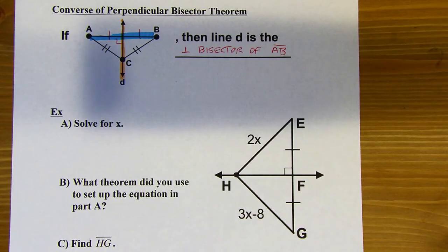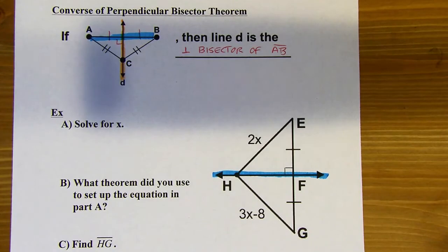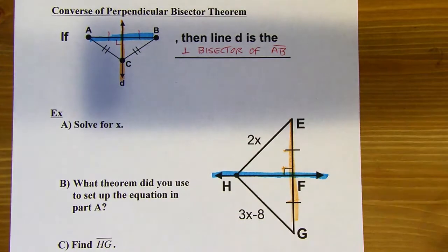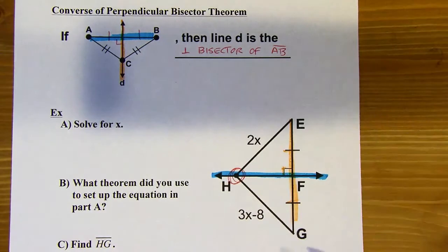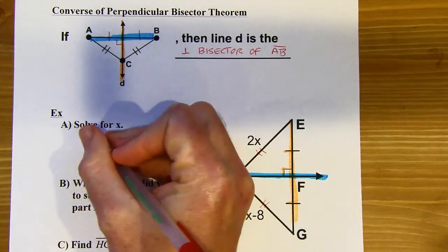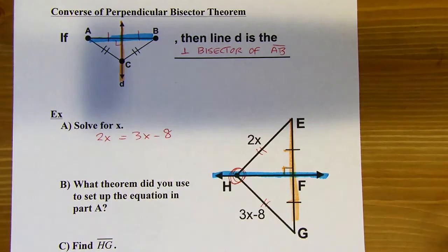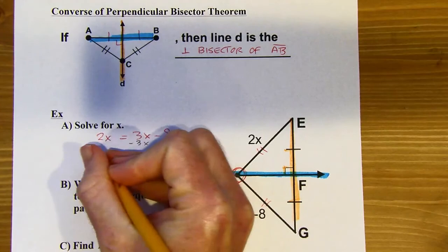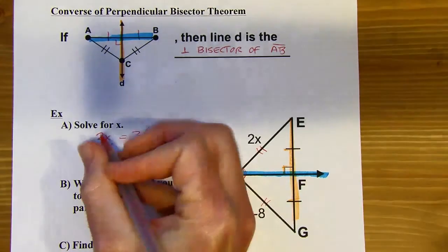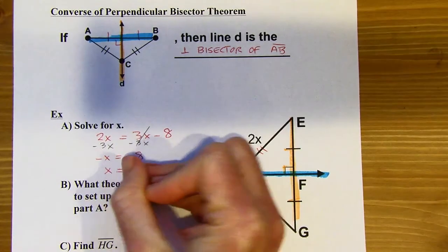Looking at this first example, I can see this line is going to be the perpendicular bisector of this segment because it's perpendicular to it and it cuts it in half. So that means any point on the perpendicular bisector, like point H, is going to be equidistant from the endpoints. That means 2x is going to equal 3x minus 8. I'll set up my equation and solve for x by subtracting 3x from both sides, then dividing by negative 1. X is going to equal 8.